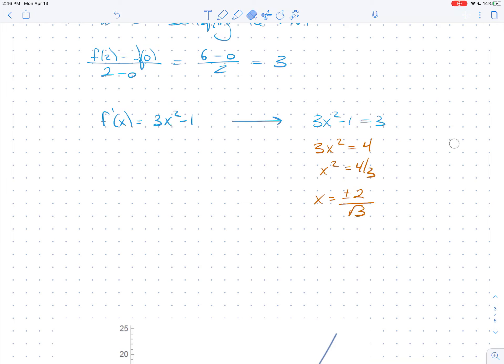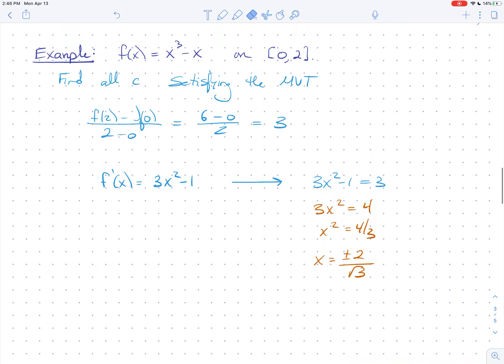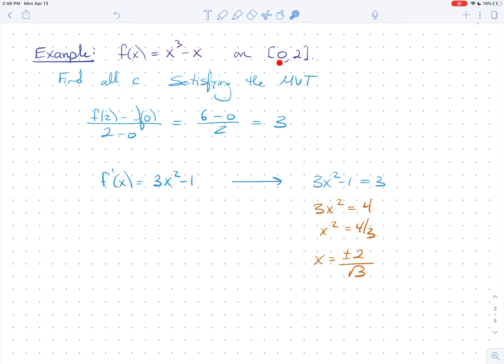Now wait a minute. That's all fine and good that we got 2. You'll sometimes get 2. But we're only operating on the interval from 0 to 2. So our x is x equals positive 2 over root 3. So x equals 2 over root 3 satisfies the mean value theorem.